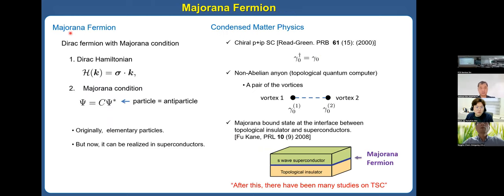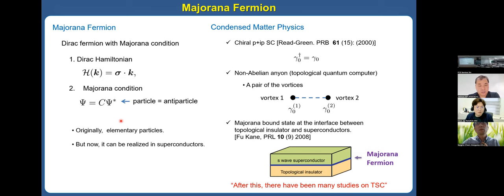I will introduce the Majorana fermion. The Majorana fermion is a fermion described by a specific field equation. By definition, the Majorana fermion is a fermion that is its own antiparticle. It was originally suggested as an elementary particle, but now the Majorana fermion can be realized in superconductors.